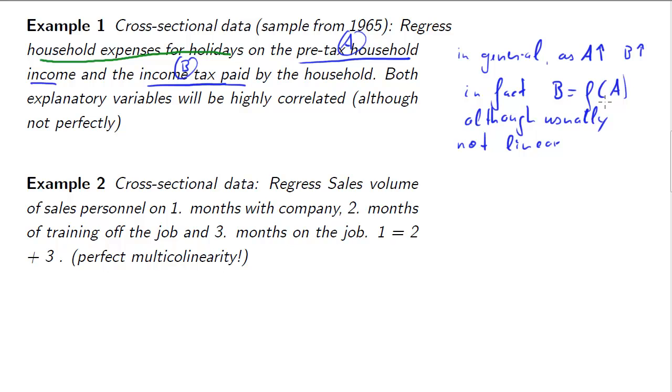So this function, how you calculate tax given your income, is not normally a linear function. Therefore, these two variables A and B will not be perfectly correlated, but they may be highly correlated. That's a case where we're having highly correlated but not perfectly correlated variables.